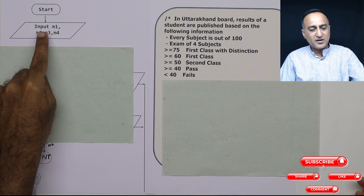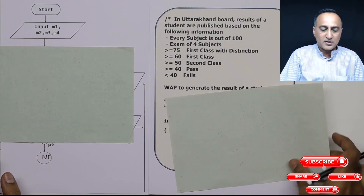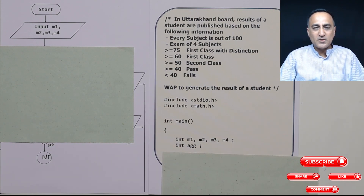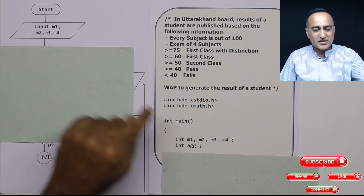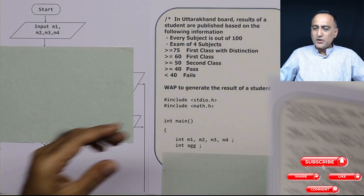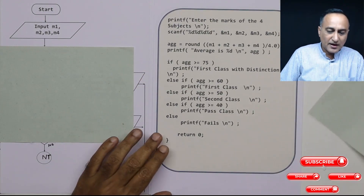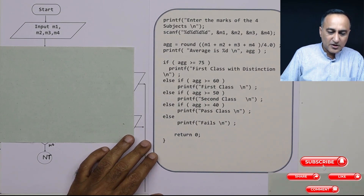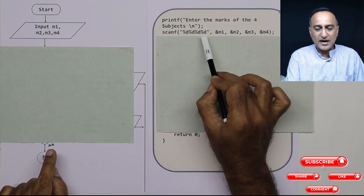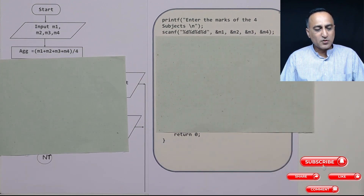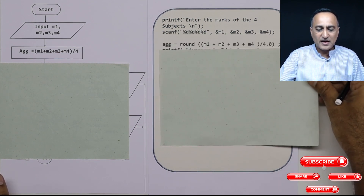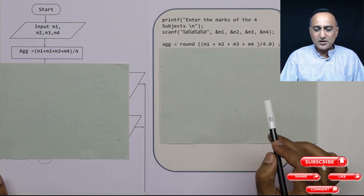We ask the person to enter the marks of four subjects as m1, m2, m3, and m4. So we are defining four integer variables m1, m2, m3, and m4 as memory locations to hold the marks of four subjects. There is a one-to-one correspondence between the flowchart and the code. The next step is to calculate the aggregate as the sum of the marks of four subjects divided by 4.0, so aggregate is m1 plus m2 plus m3 plus m4 divided by 4.0.